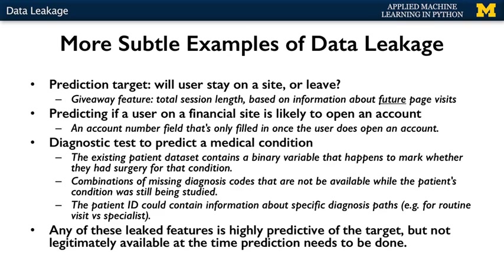Another example in the same patient dataset might involve the form of the patient ID. The ID might be assigned depending on a particular diagnosis path — the ID could be different if it's the result of a visit to a specialist, where the initial doctor determined that the medical condition was likely. This last example illustrates that there are many different ways data leakage could occur in a training set, and in fact, it's often the case that more than one leakage problem is present at once. Sometimes, fixing one leaking feature can reveal the existence of a second one.